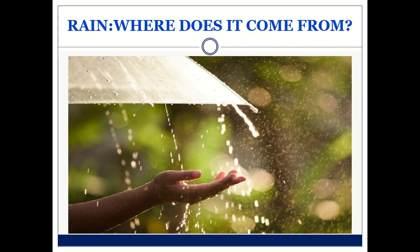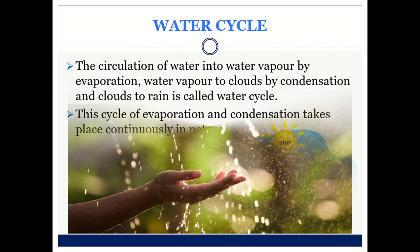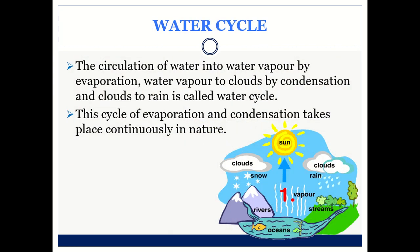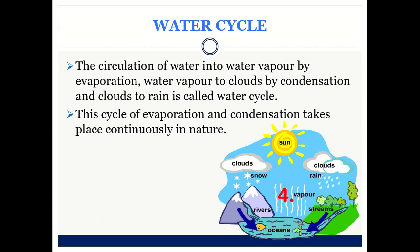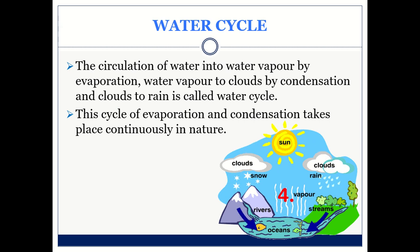Today we learn about the water cycle. The circulation of water into water vapour by evaporation, water vapour to clouds by condensation, and clouds to rain is called the water cycle. This cycle of evaporation and condensation takes place continuously in nature.